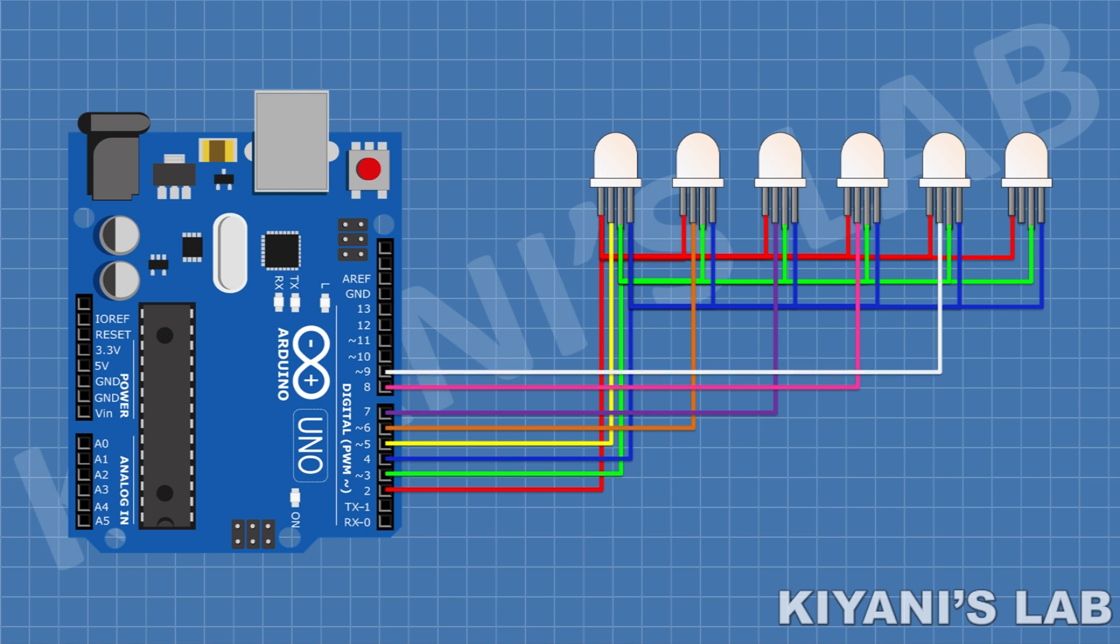After that, connect the common pin of the fifth LED to pin number D9 of Arduino. After that, connect the common pin of the sixth LED to pin number D10 of Arduino. So we have completed all the connections.